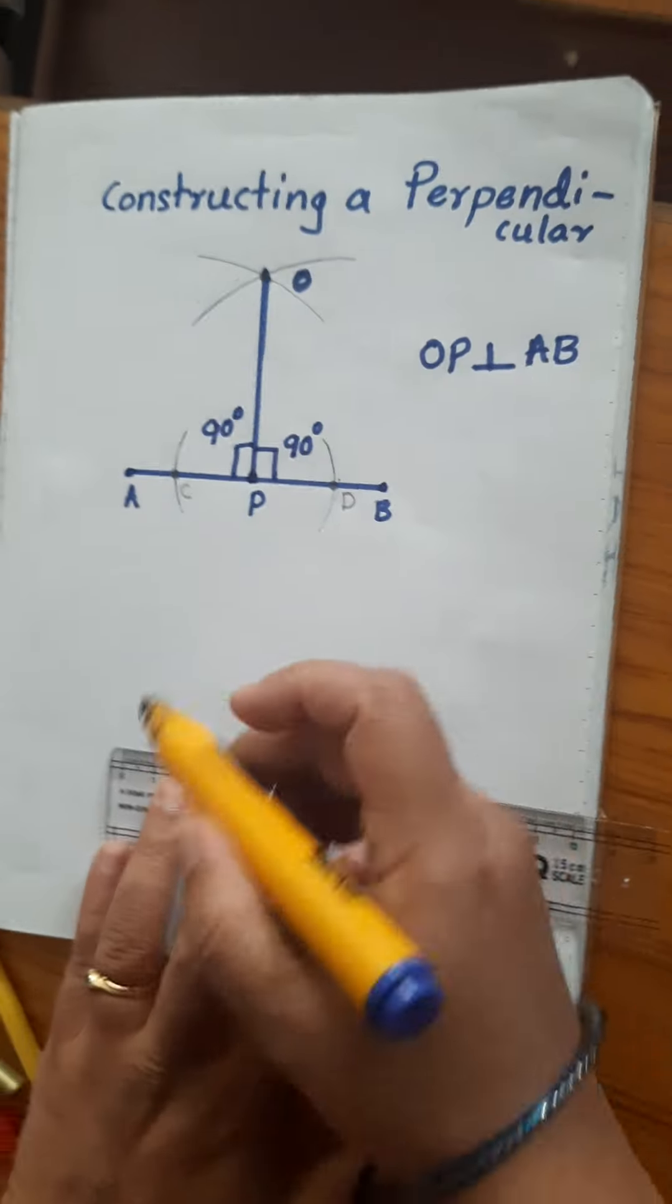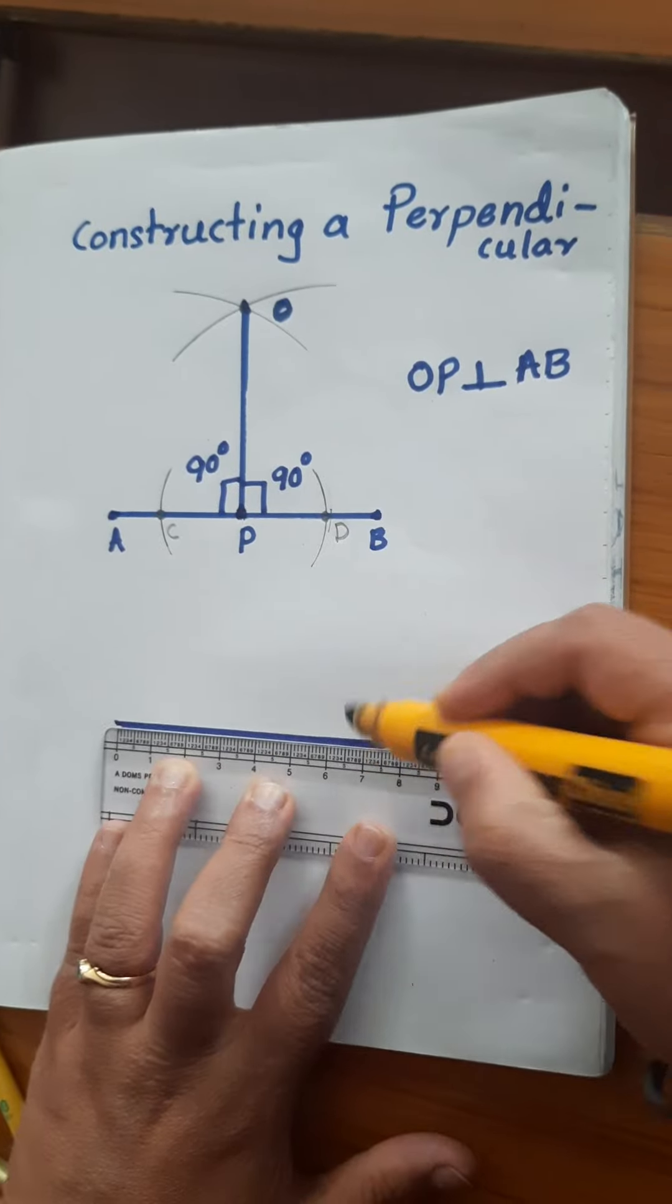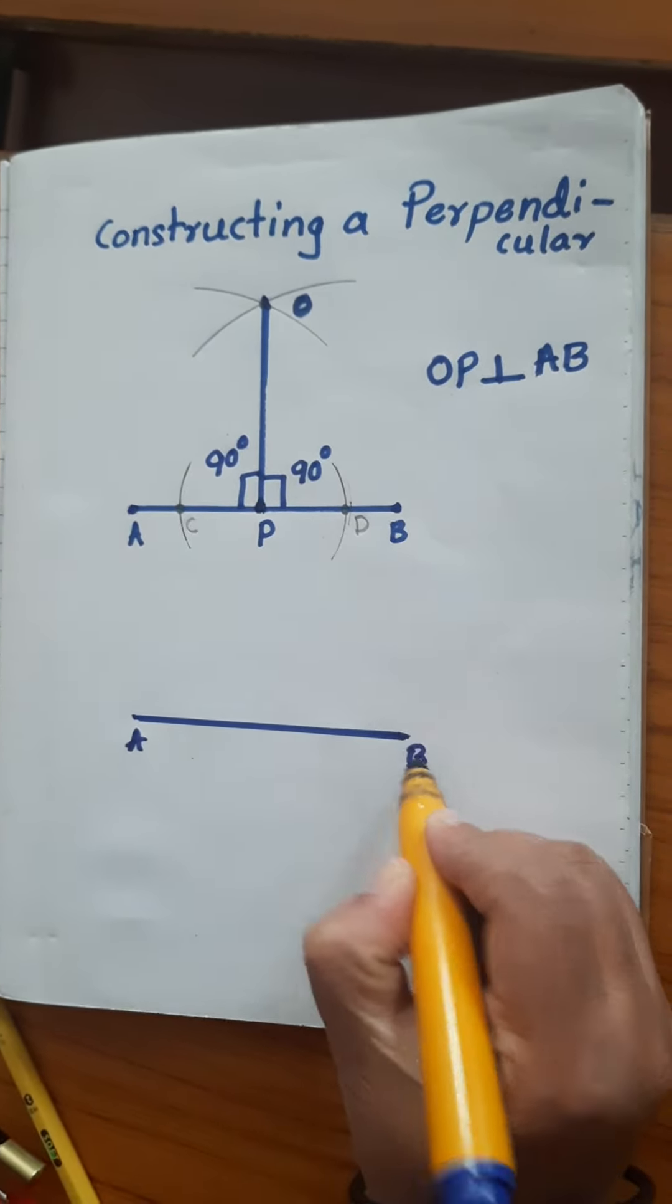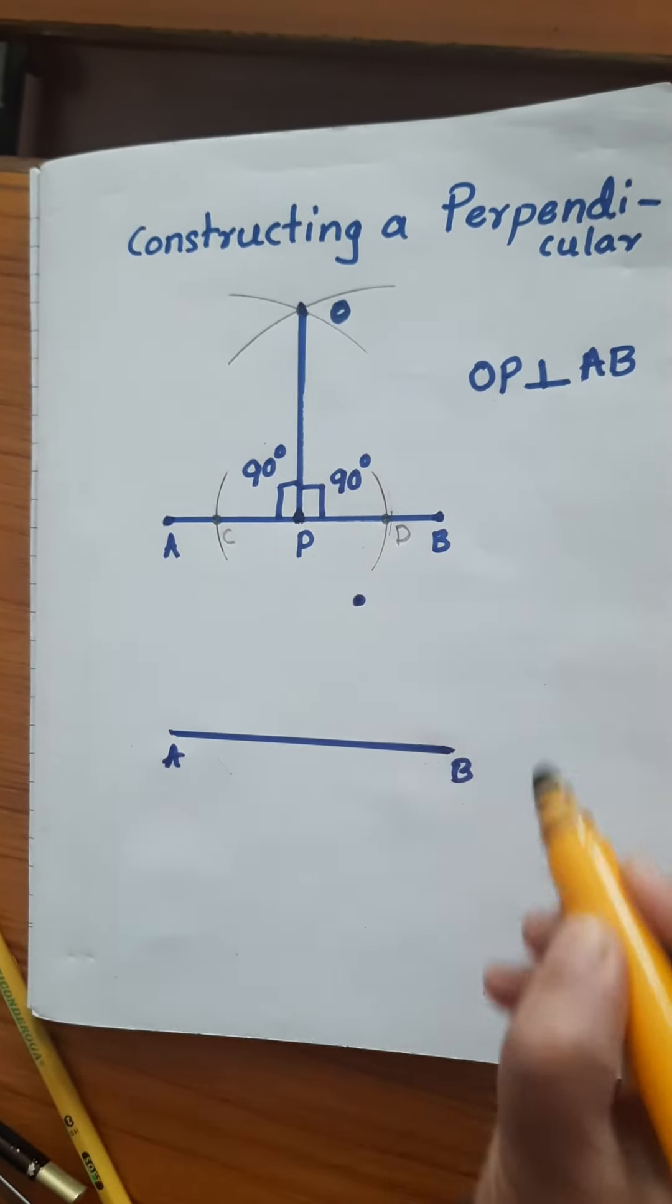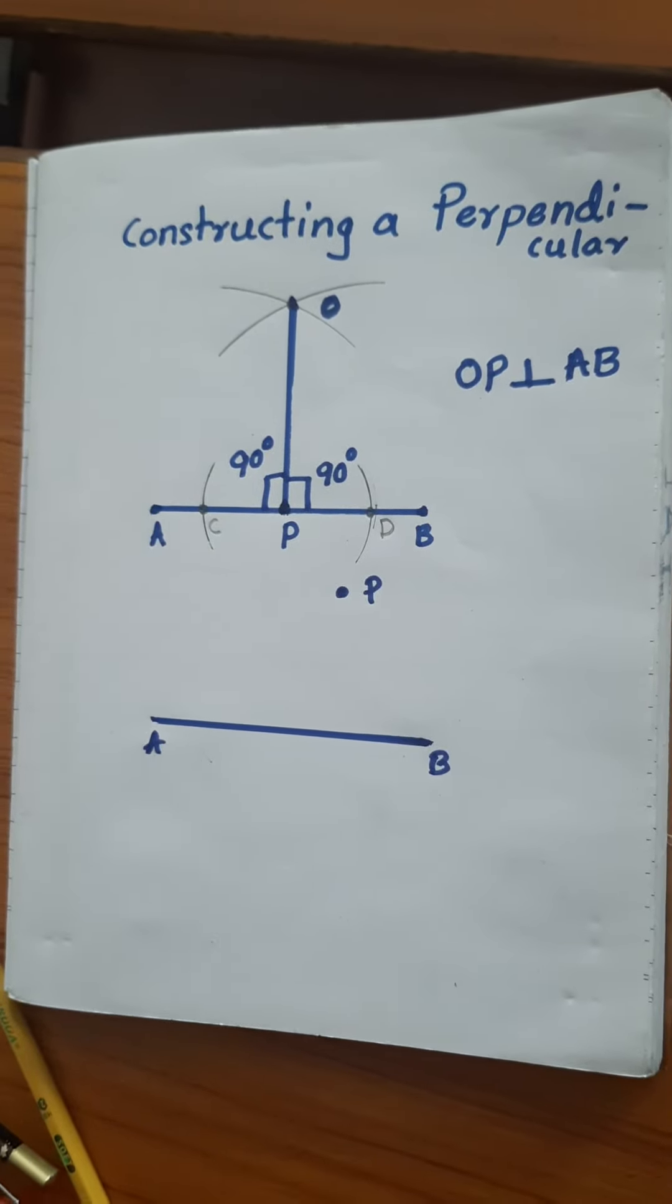For that we need to draw again a line segment or a line. The condition is the point is somewhere outside the line. The P point was earlier on the line; now it is outside the line.